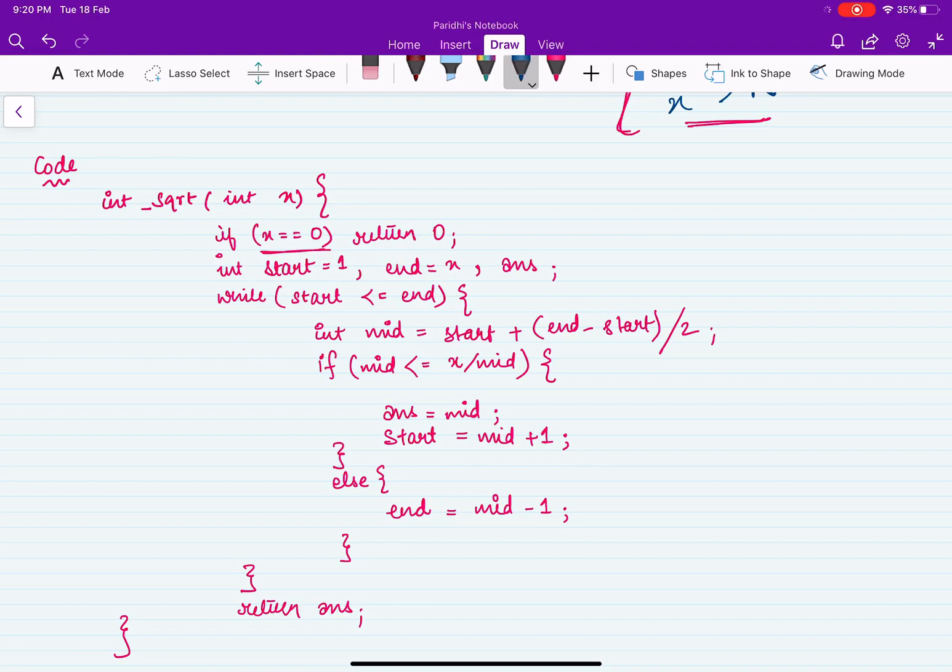If x equal to 0, we will simply return 0. And otherwise, we will put our start to 1 and end to x.